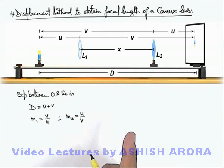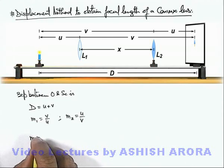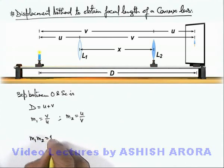And we can see in both cases, or the lens position L1 or L2, if sharp images are being produced, then the product of their magnification must be equal to unity.